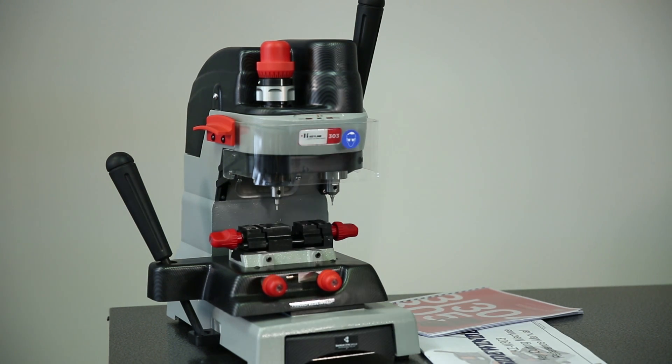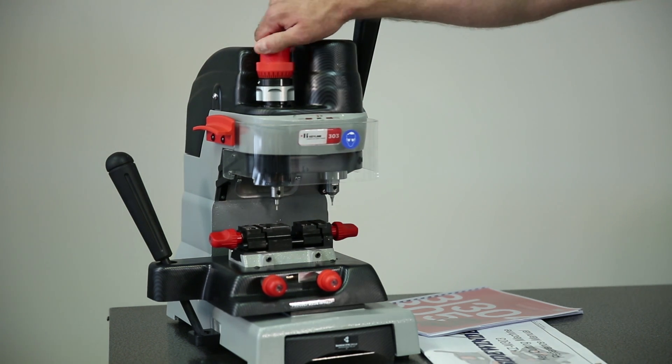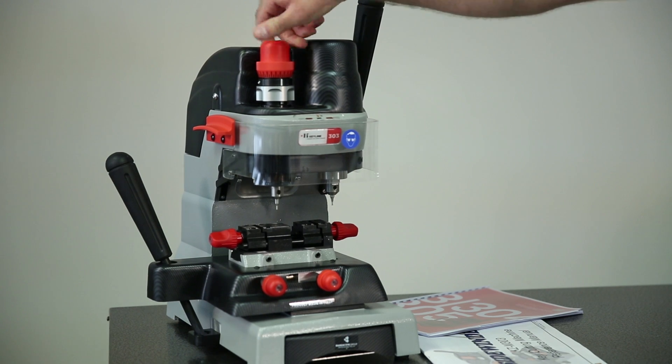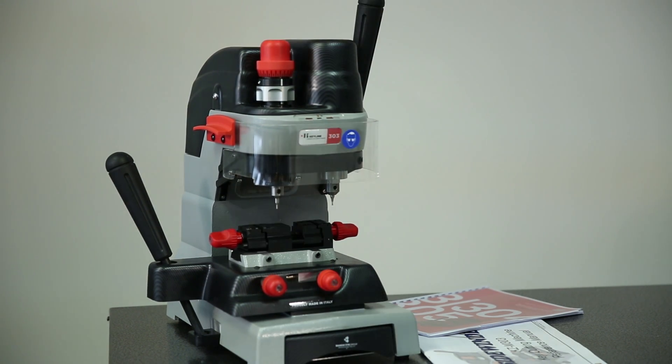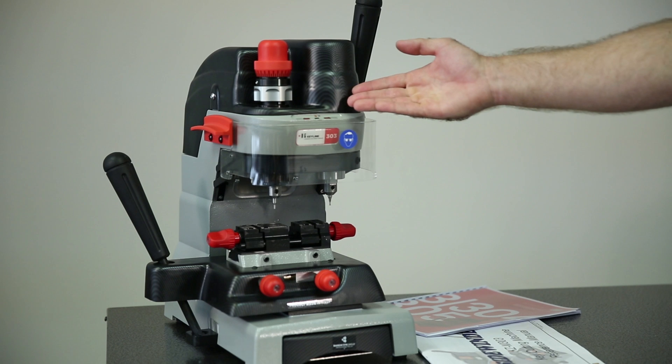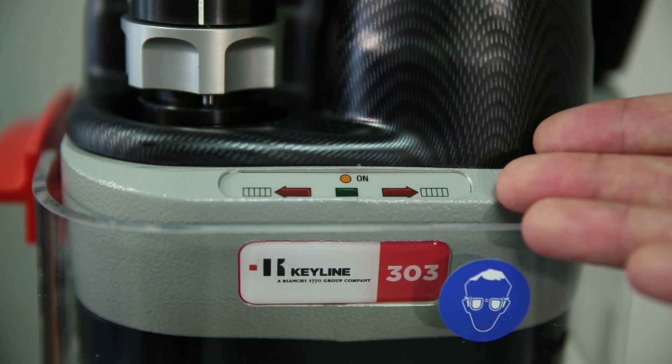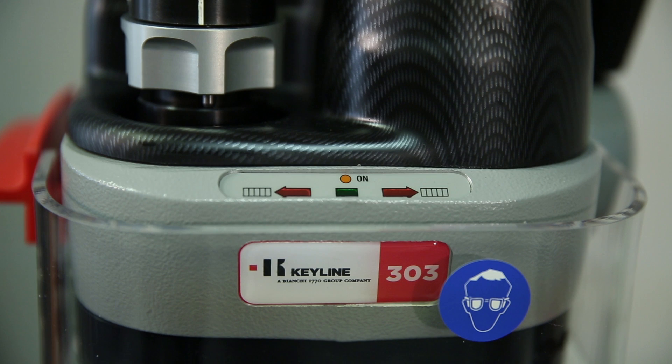The calibration dial is located on top of the tracer assembly. When turned, it will lower or raise the tracer during calibration. The calibration indicator lights are located on the front of the machine and are used to guide you through the calibration process.